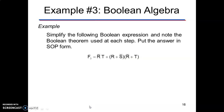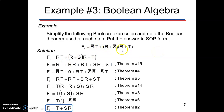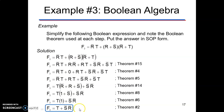Let us consider a simple example: simplify (r̄·t + r + s̄)·(r̄ + t). Multiplying r inside gives r·r̄ + r·t + s̄·r̄ + s̄·t. Since r·r̄ = 0, we have r̄·t + r·t + s̄·r̄ + s̄·t. Taking t common from the first, second, and last terms gives t·(r̄ + r + s̄) + s̄·r̄. Since r + r̄ = 1 and 1 + s̄ = 1, this simplifies to t + s̄·r̄.